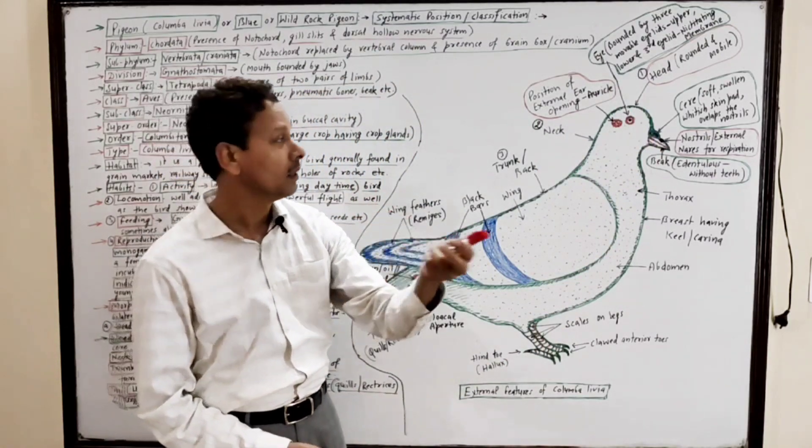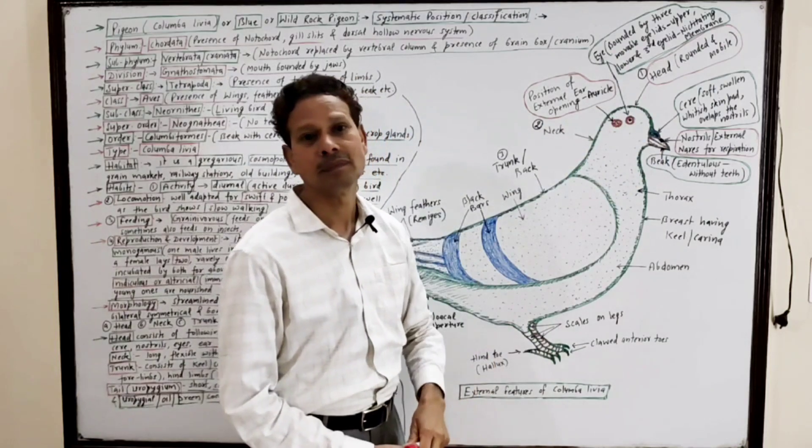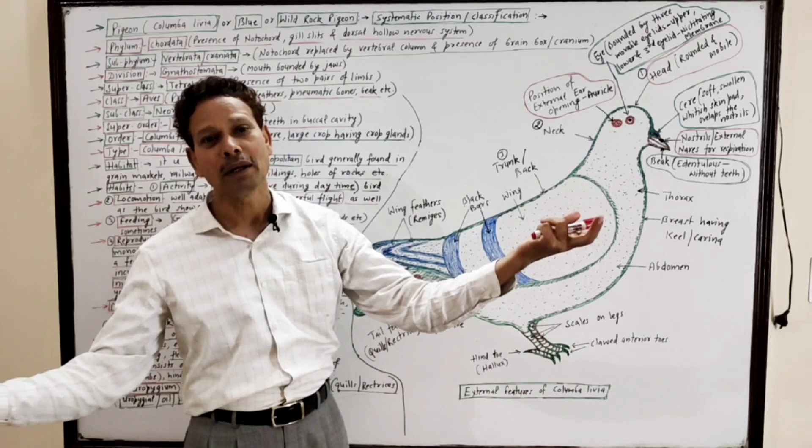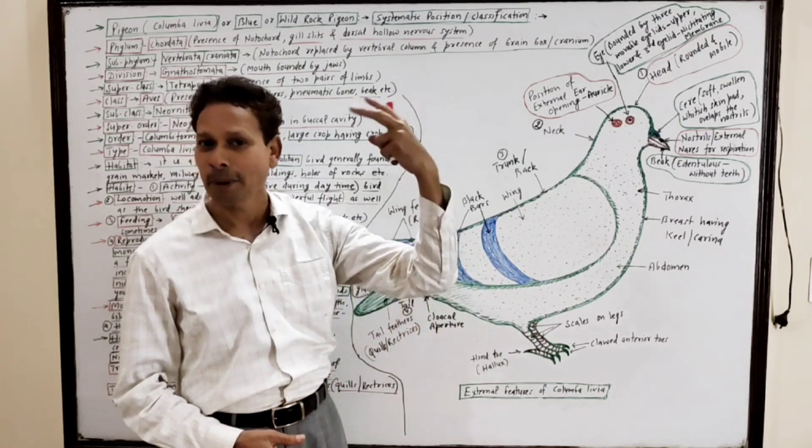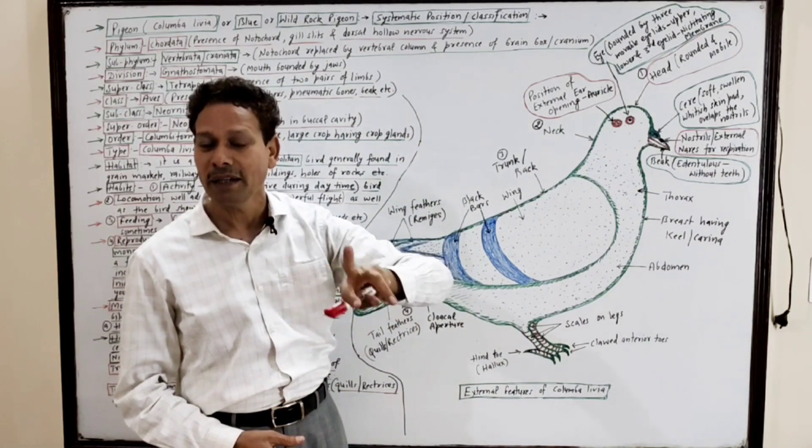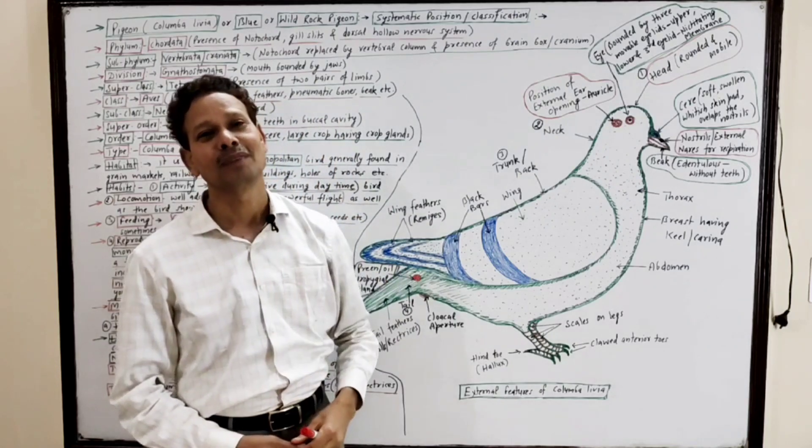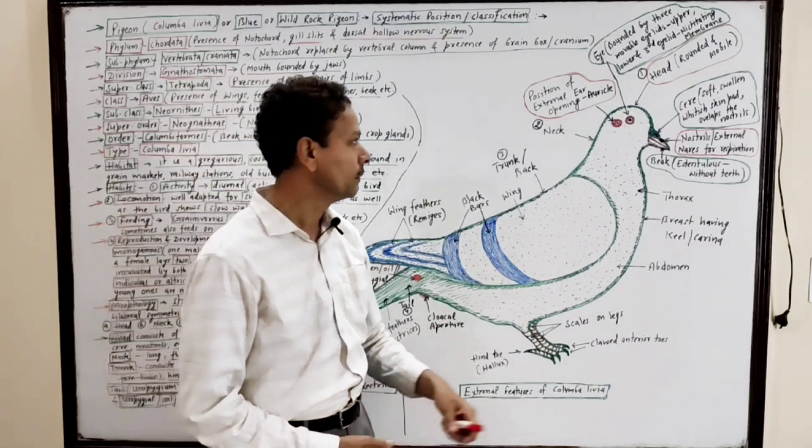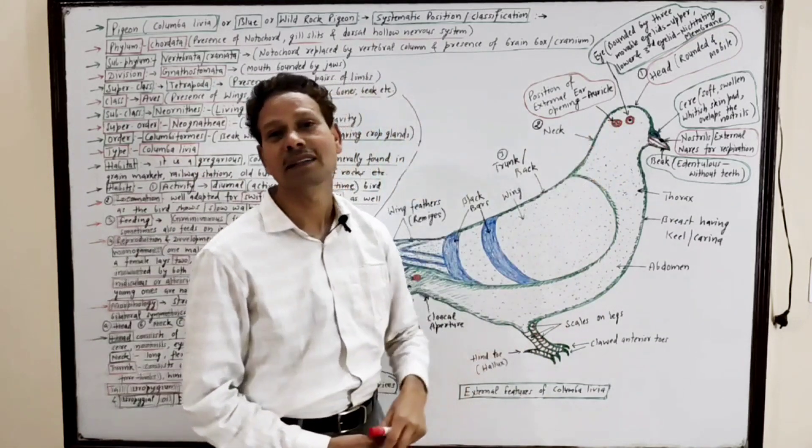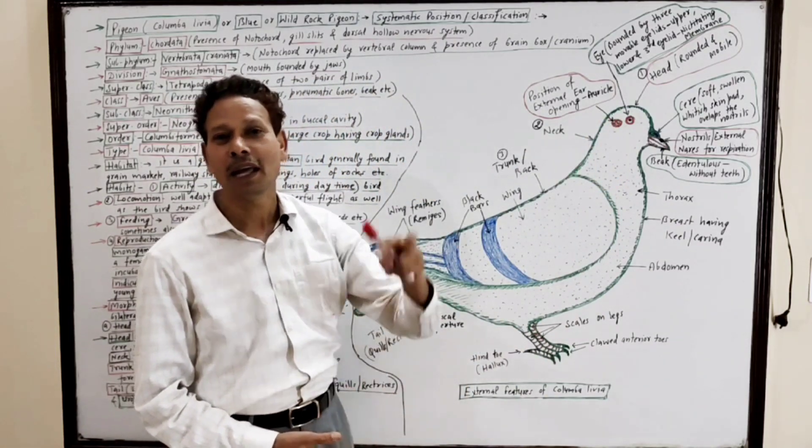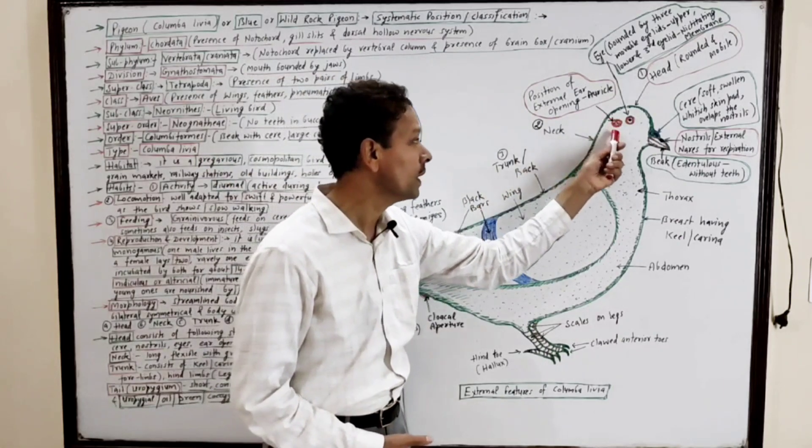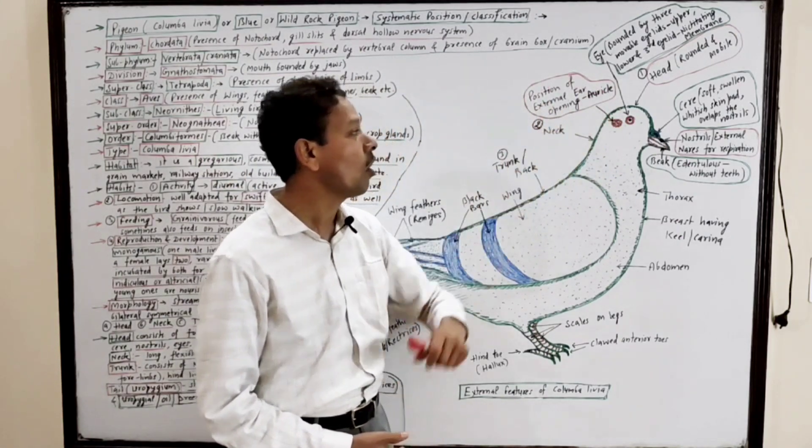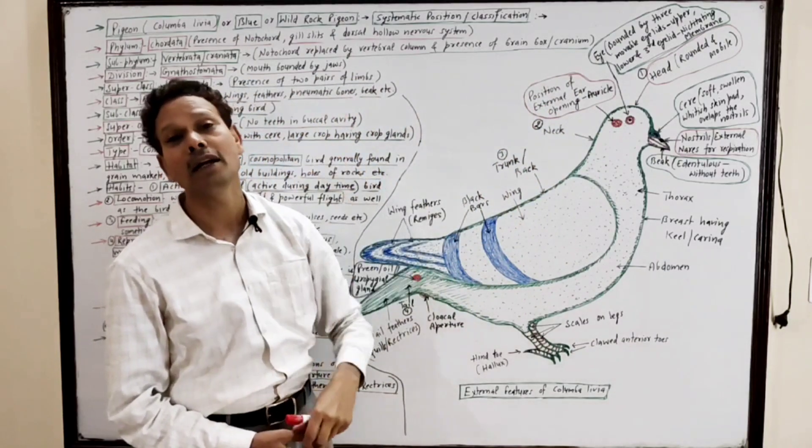A pair of eyes are present on head region. The eyes, each eye is bounded by three movable eyelids: upper eyelid, lower eyelid, and third eyelid which is a nictitating membrane that covers the eye. Just behind each eye, a pair of, this is the position of opening of external ear, auricle opening.